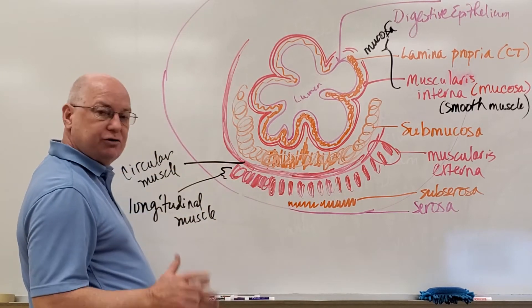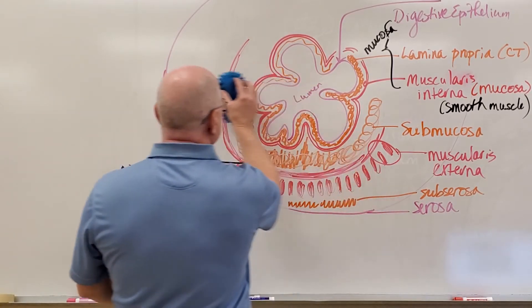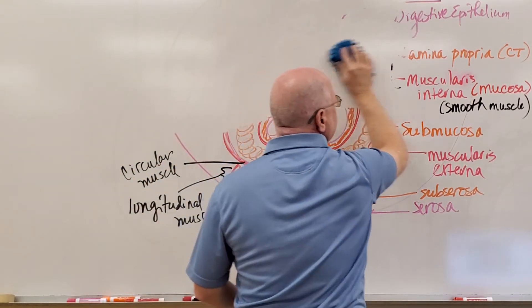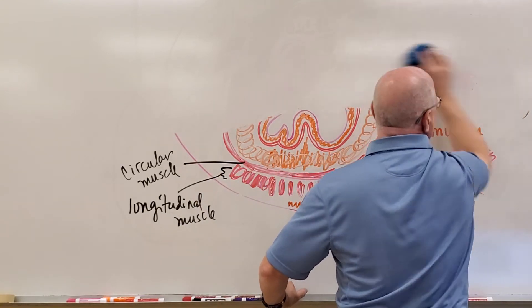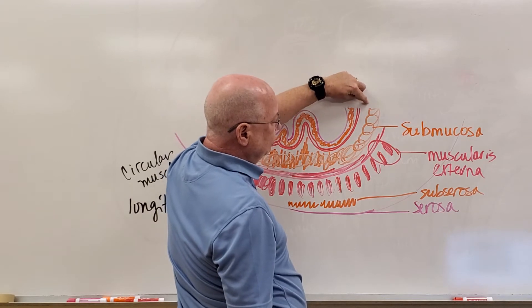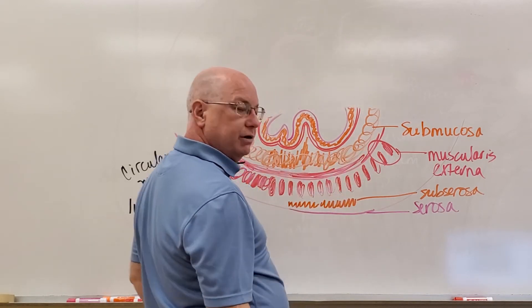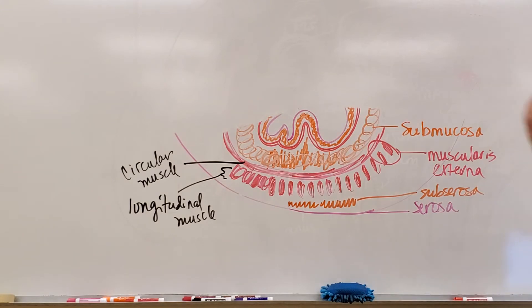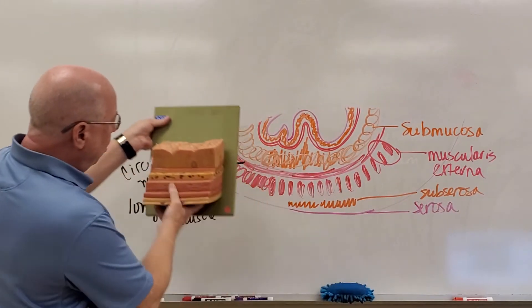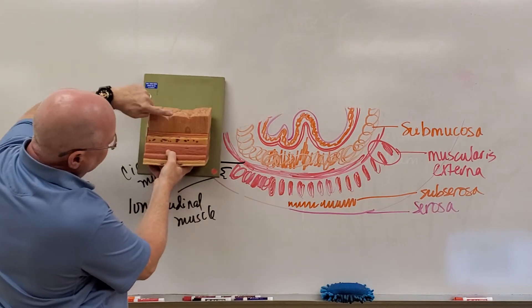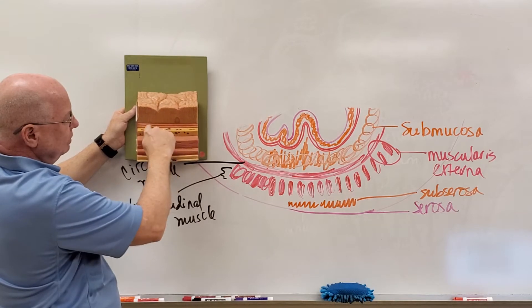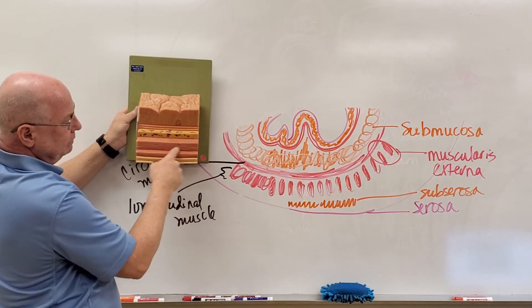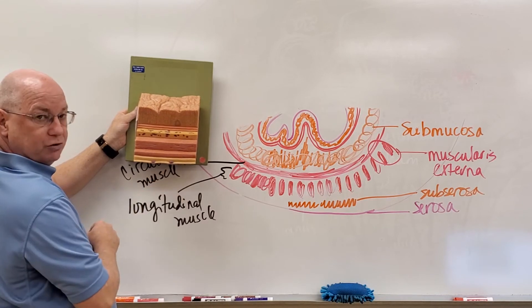Now that I know all those layers, let me show you two models. These two models represent parts of our digestive tract. This is the wall of your stomach. Going from the lumen through all of these layers: I have the mucosa, the muscularis mucosa with its two layers, the submucosa, and the muscularis externa — which has three layers in the stomach: oblique, circular, and longitudinal — then the subserosa and serosa.